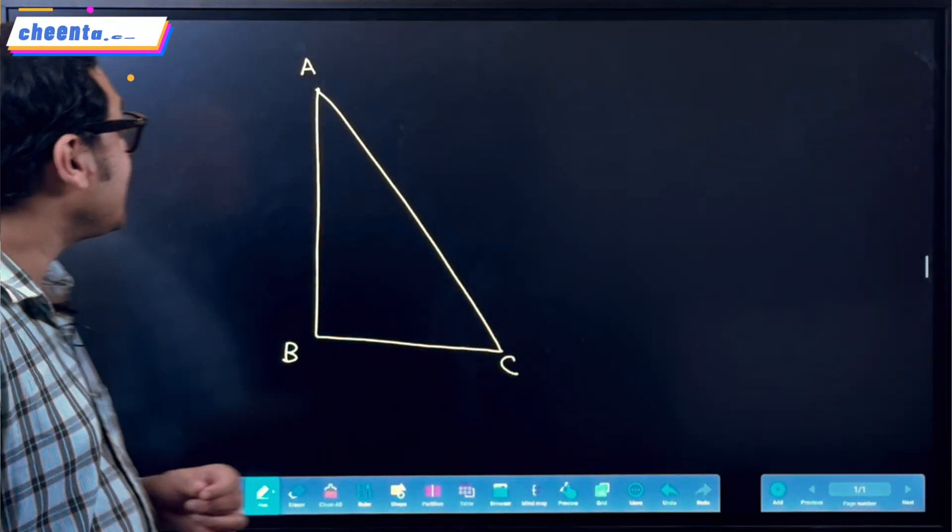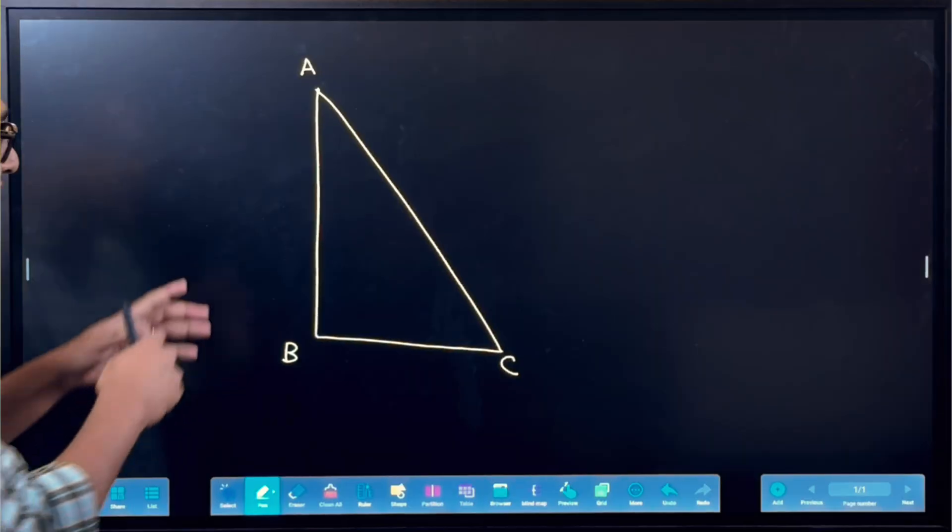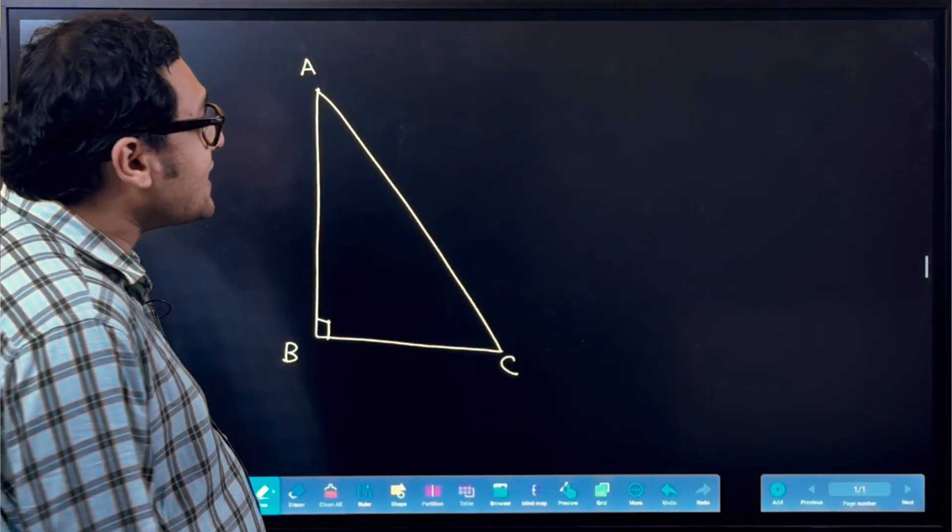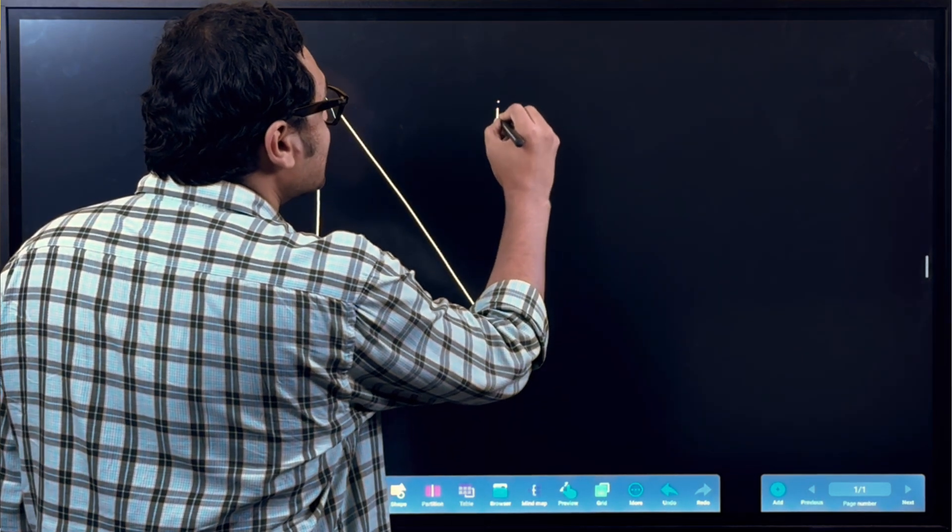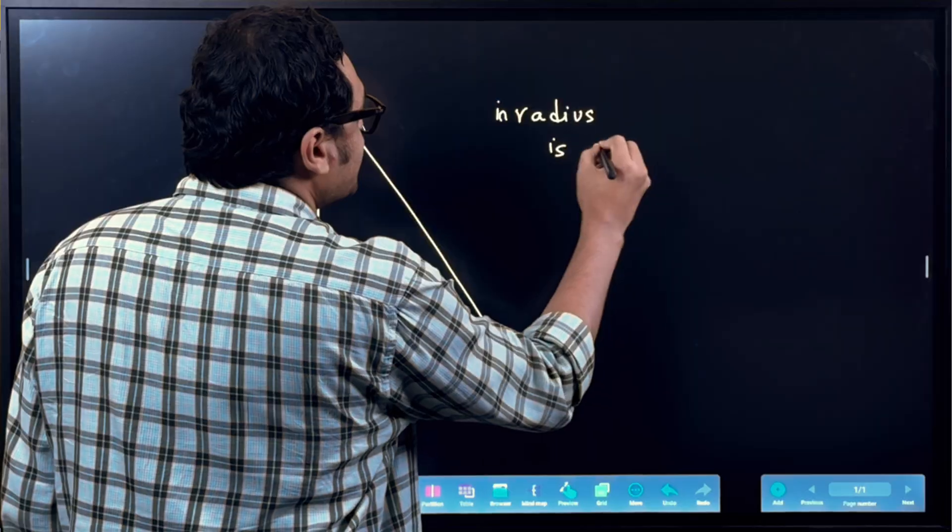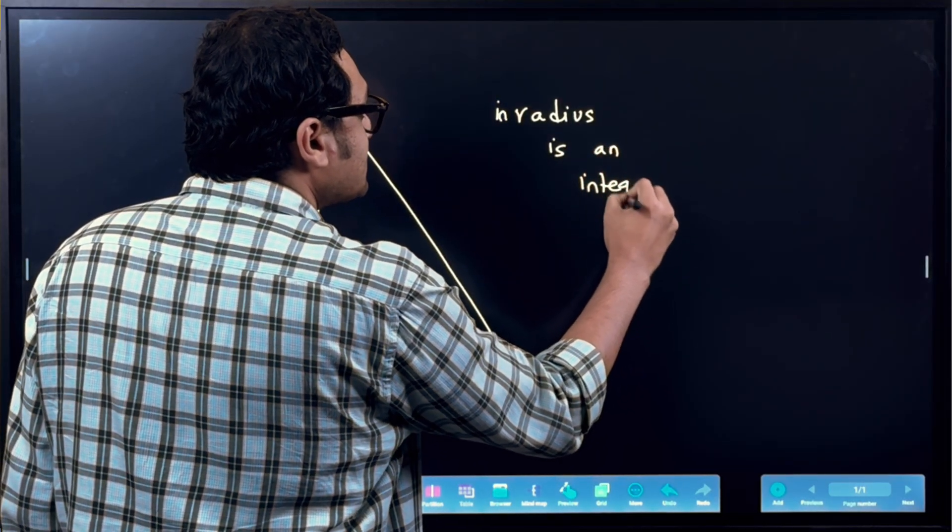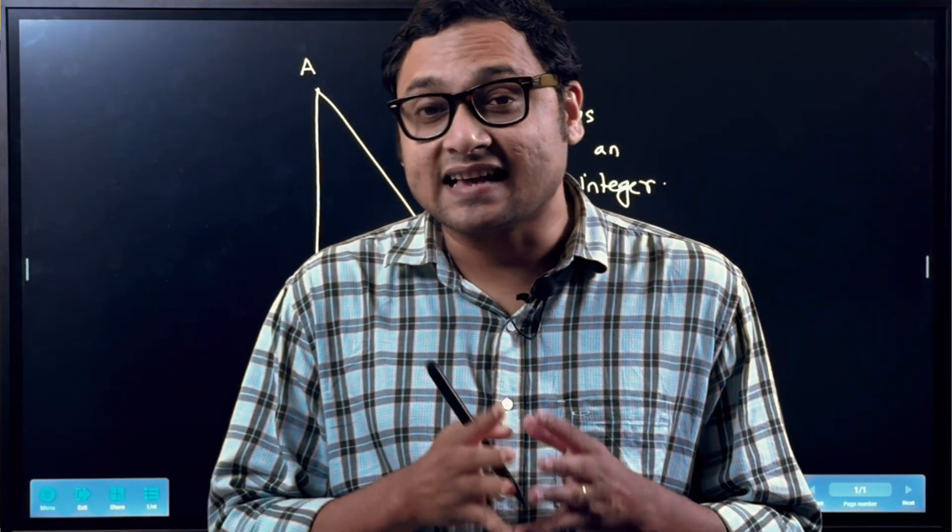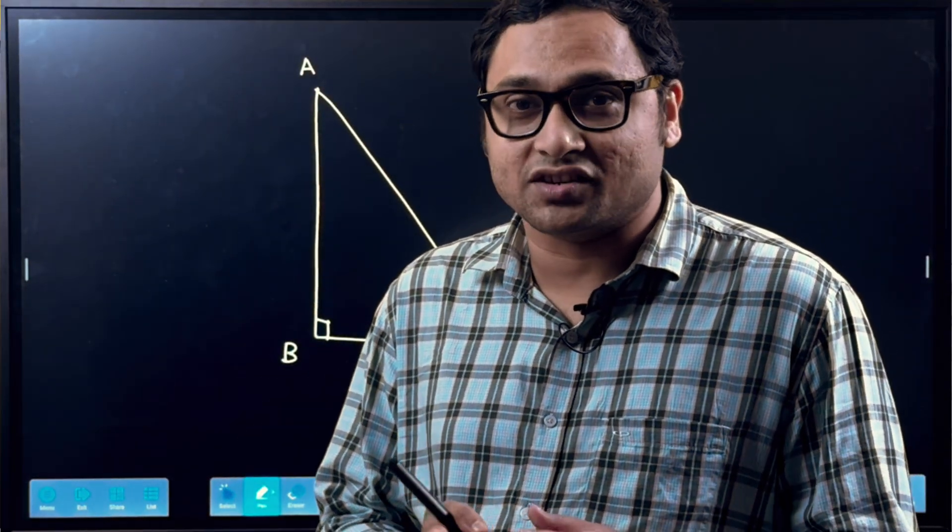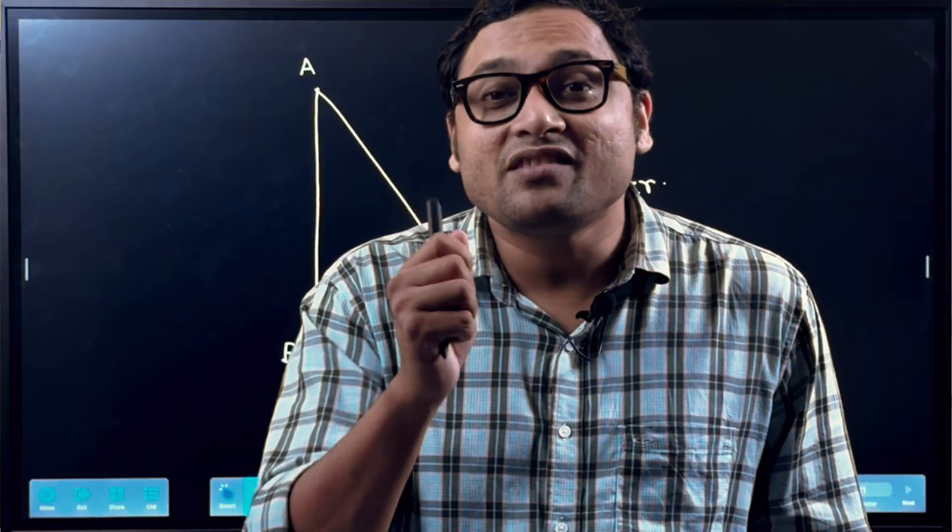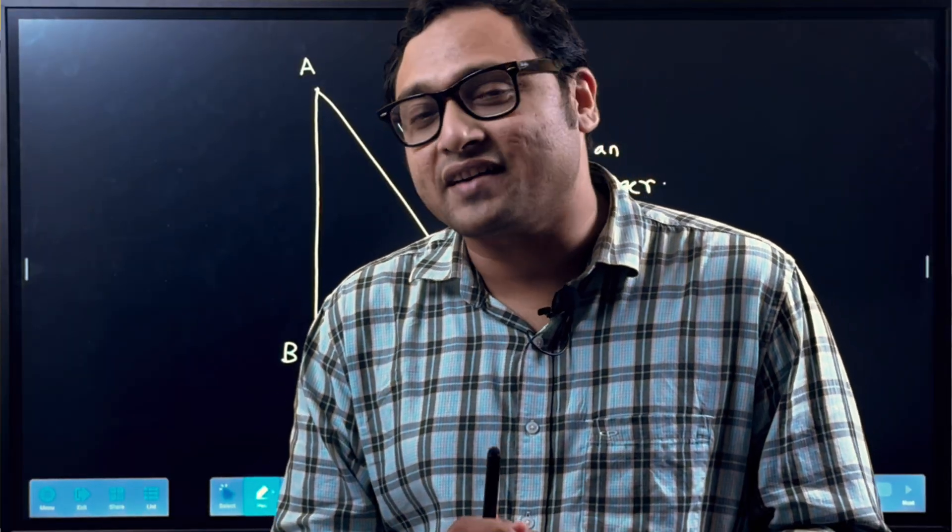This one says that there is a triangle ABC. It's a right triangle. This angle is a right angle. And we want to show that the in-radius actually, the in-radius is an integer. It is given that the right triangle's sides are all integers. And we want to show that if the sides are all integers, then the in-radius of that triangle is also an integer.